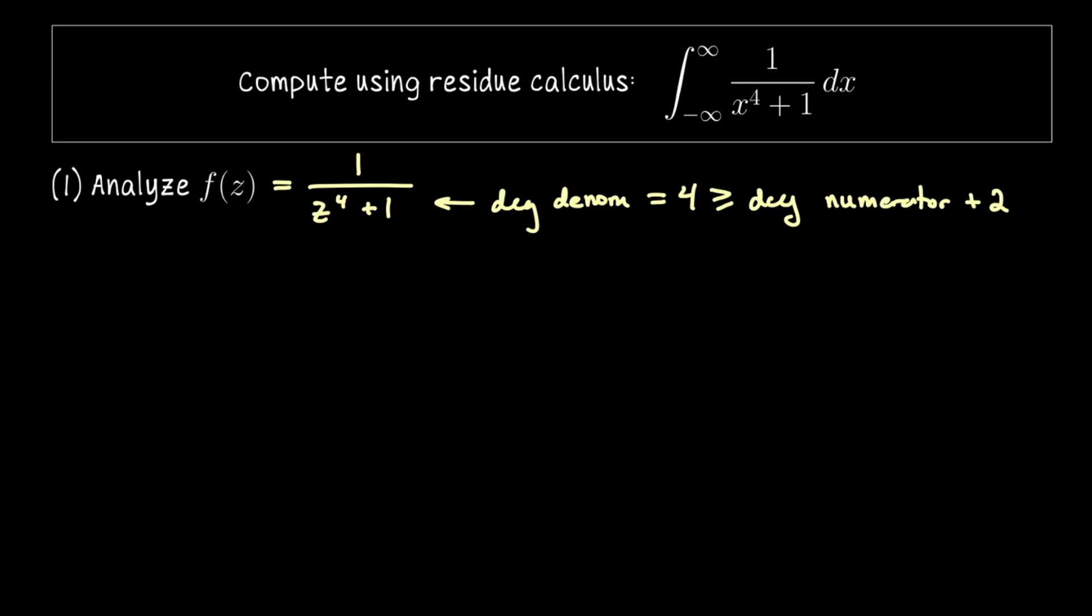When we have this kind of rational function with respect to z, that's what we want to see when we're doing this kind of contour computation that we're going to do. So I'm going to set this aside for now but then we'll mention it again at the end.